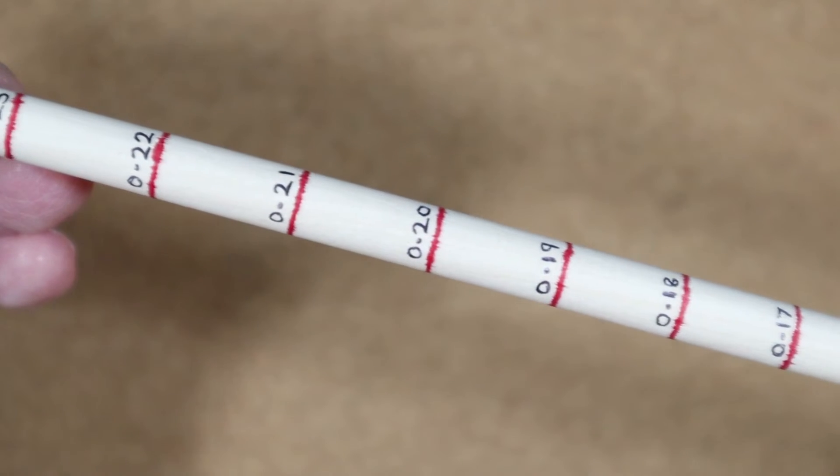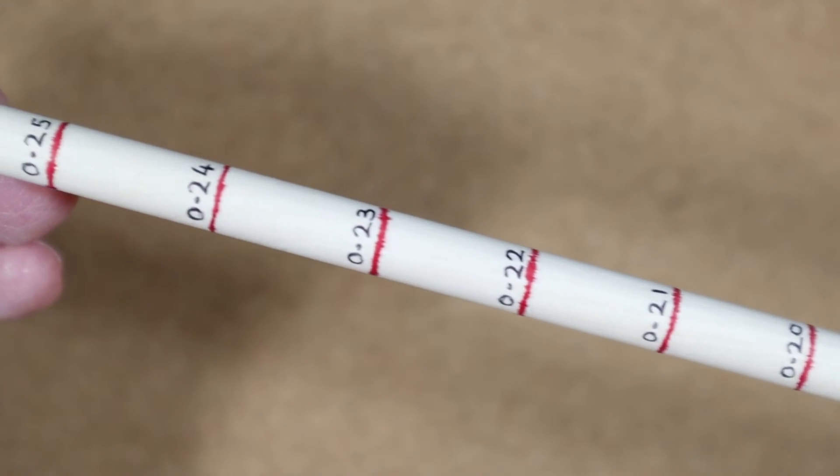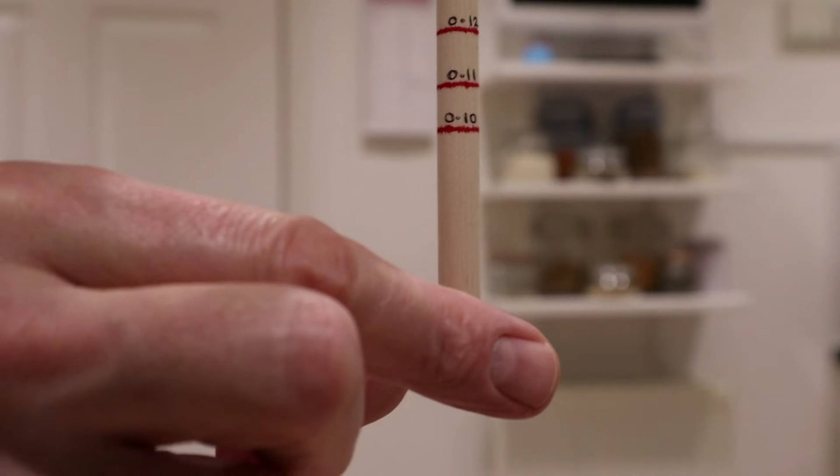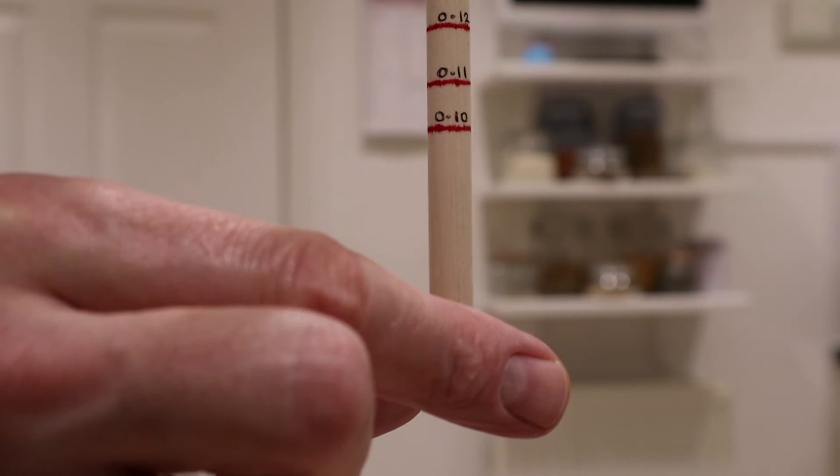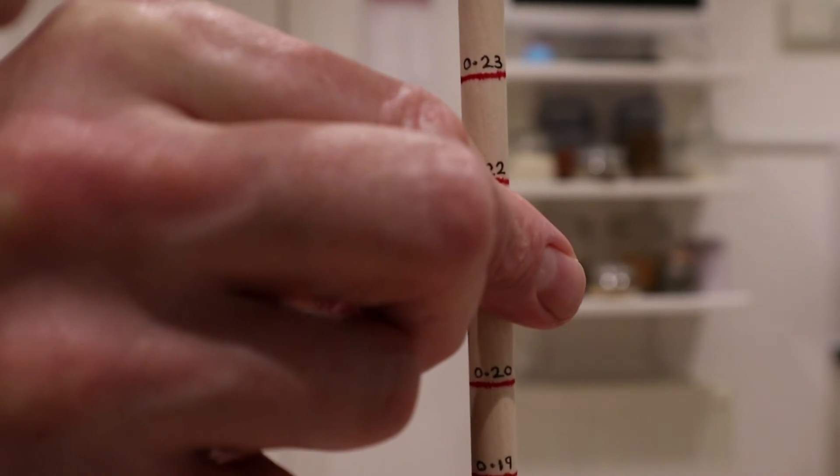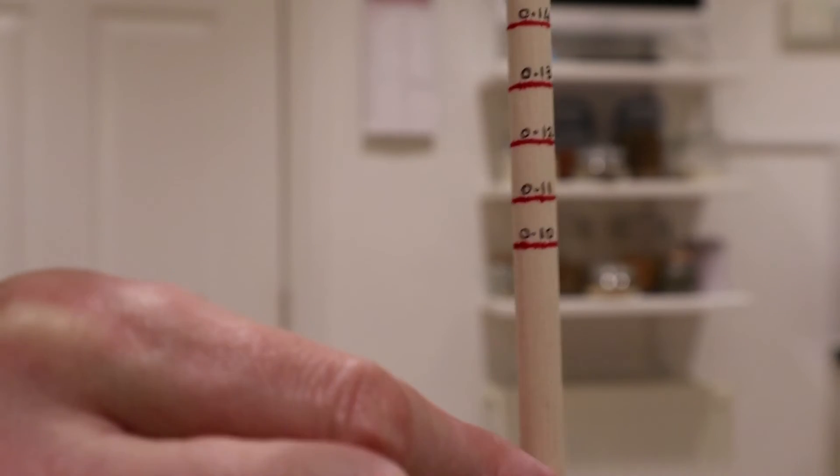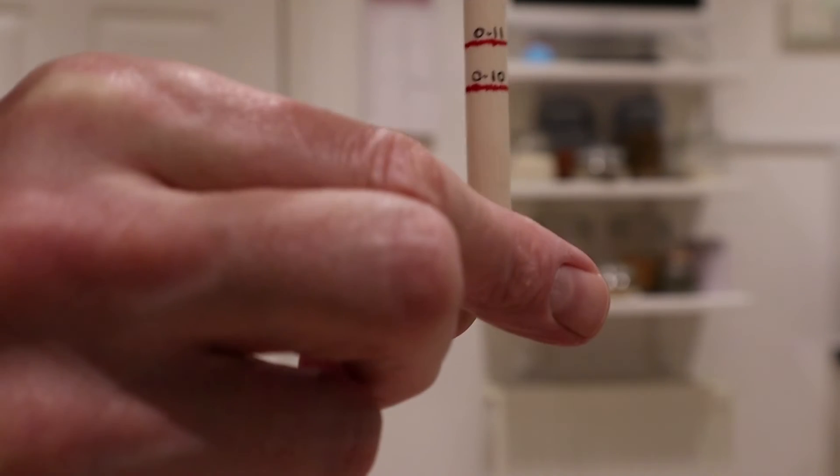To measure someone's reaction time, hold the rod still and get them to place their thumb and first finger either side of it. Drop the rod, but don't let them know when you're going to do it. The position where they catch it will indicate how long it was dropping for, which is of course the reaction time.